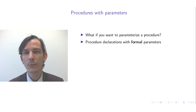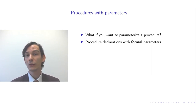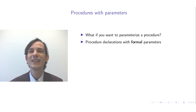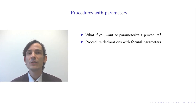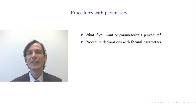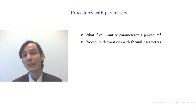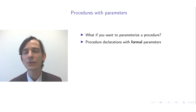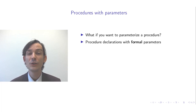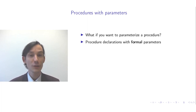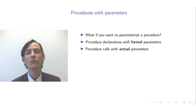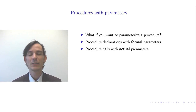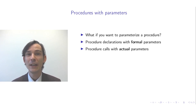Procedure declarations for dealing with parameters additionally contain formal parameters. These are declared as part of the declaration of the procedure. At the site where you perform the procedure call, you supply arguments — these are also known as actual parameters. These are the parameters of the procedure call as they happen at that point.